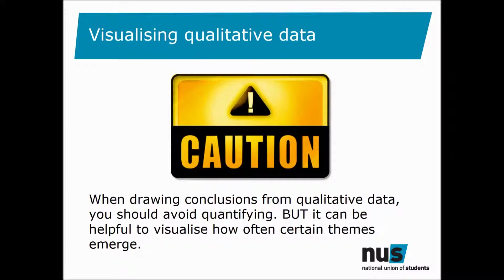For the final section of the video we'll look at a simple way to visualize qualitative data. As outlined in our qualitative data tutorial generally we advise against quantifying qualitative data using terms such as a majority of people thought. As qualitative data can never be representative in the way the quantitative can. However it can be useful to create a visual representation of the number of times certain themes emerge. Particularly for the NSS optional free text question if you could change one thing about your university experience what would it be?